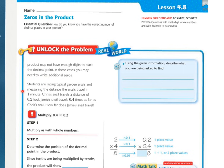Here's the problem. Students are racing typical garden snails and measuring the distance the snails travel in one minute. Chris's snail travels a distance of two-tenths of a foot. Jamie's snail travels four-tenths times as far as Chris's snail. How far does Jamie's snail travel? Press pause, take a moment, underline what you are being asked to find, and circle the important numbers.